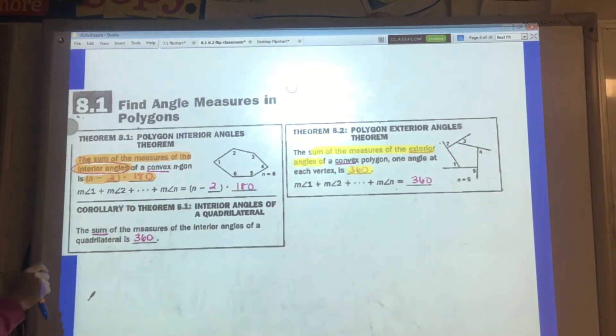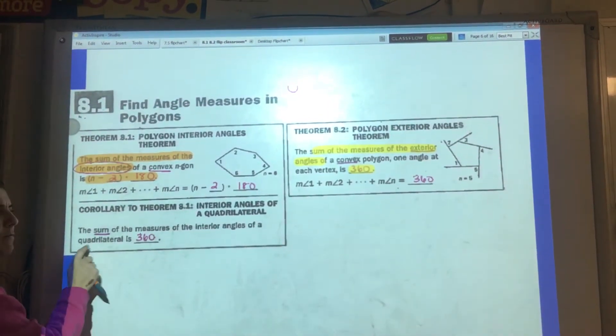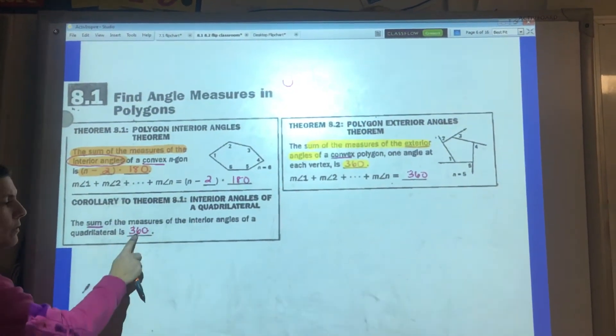This is just a corollary, one you probably already know. The sum of the measures of any four-sided figure is always going to be 360.